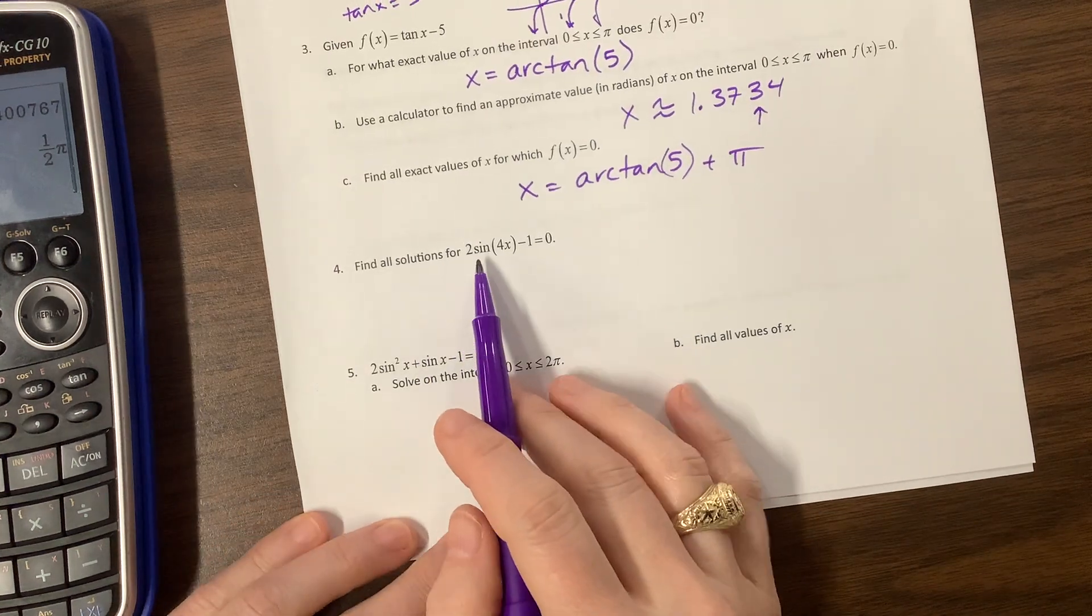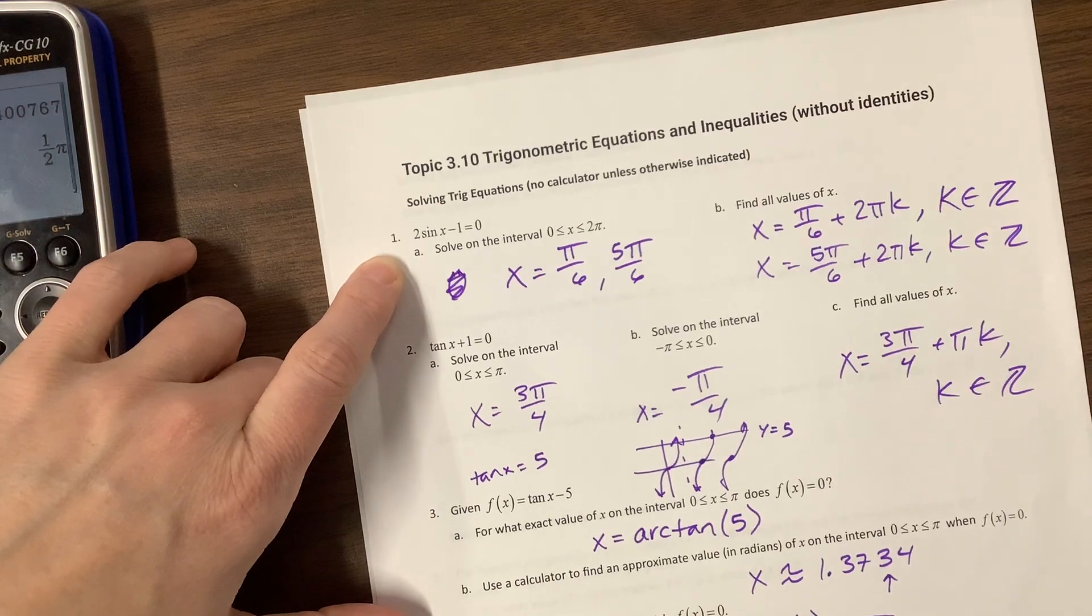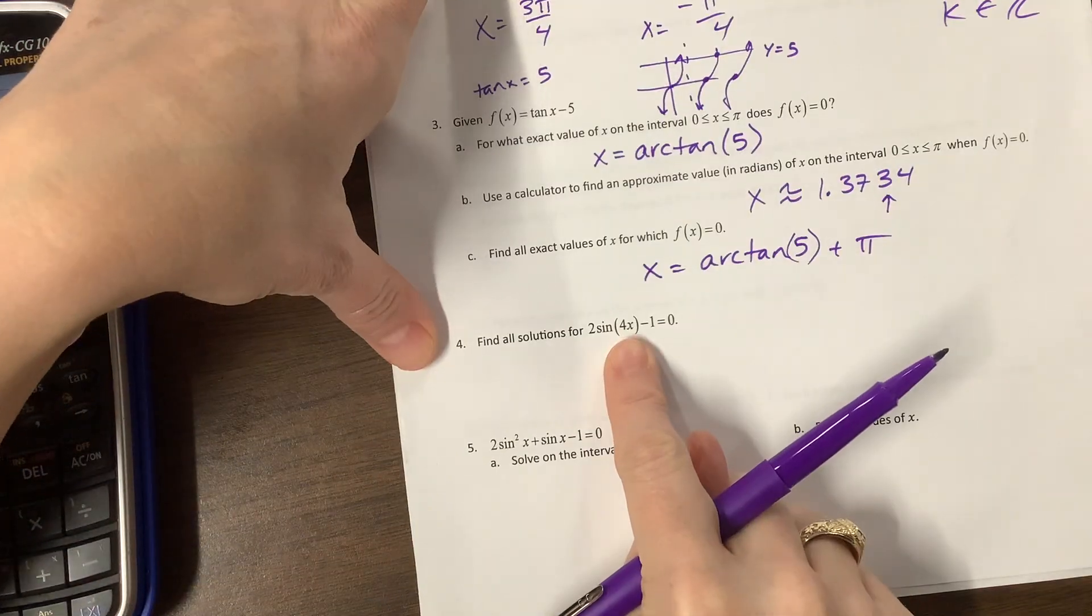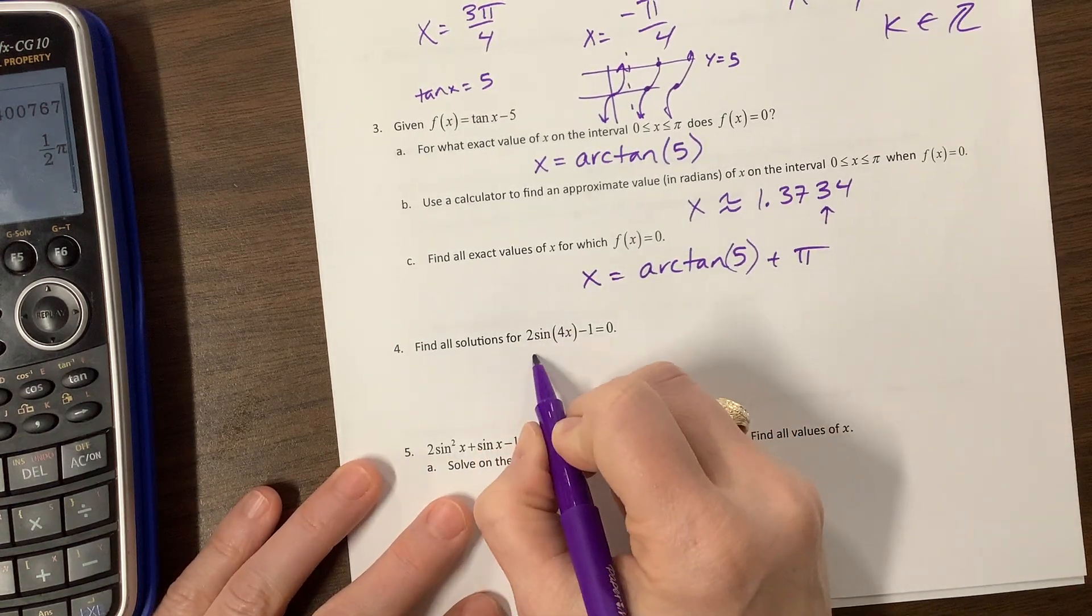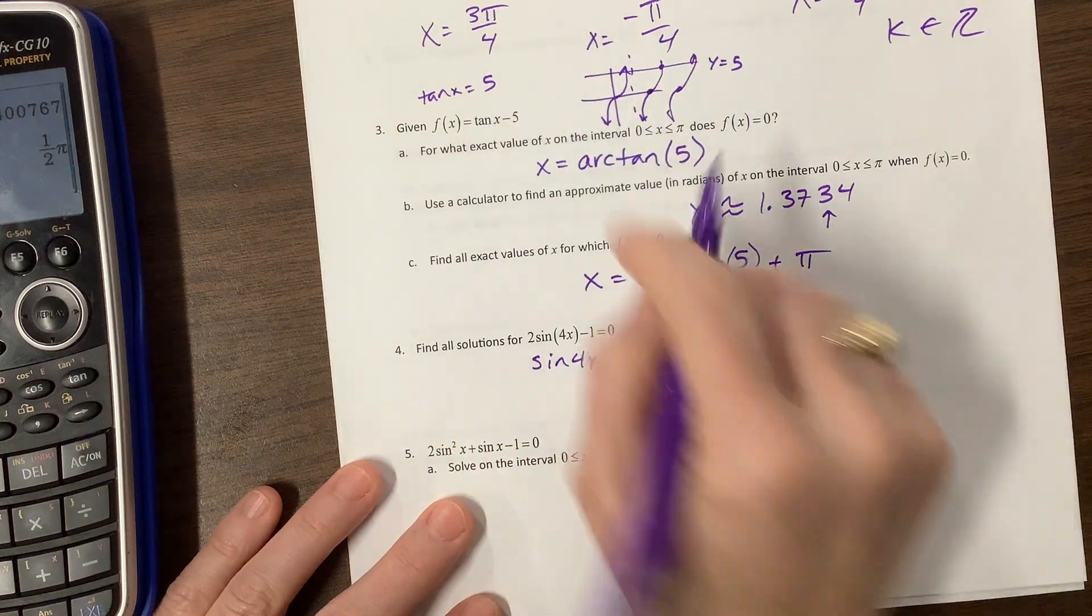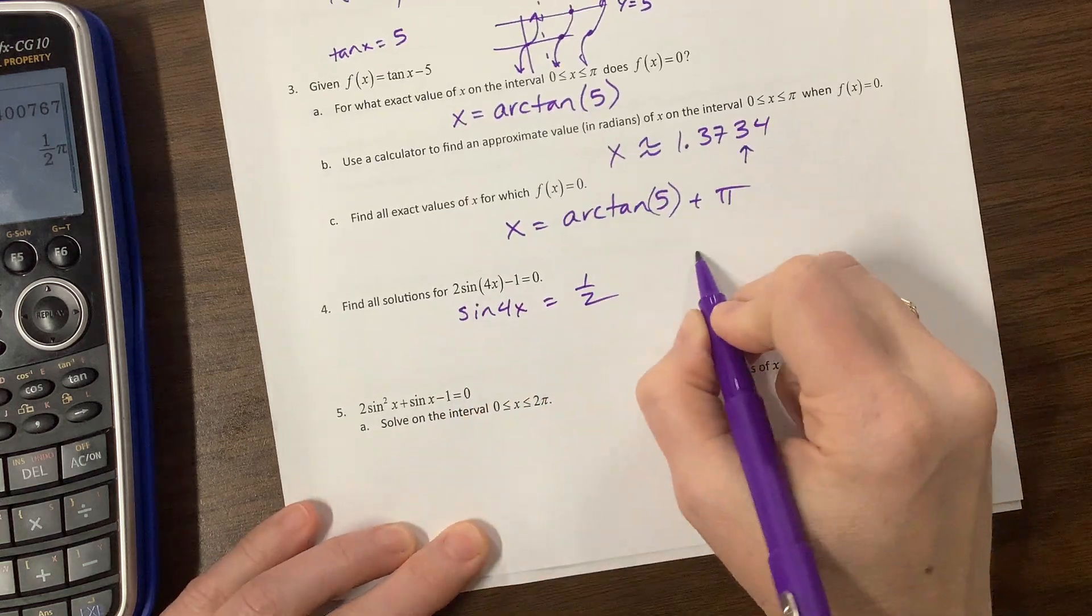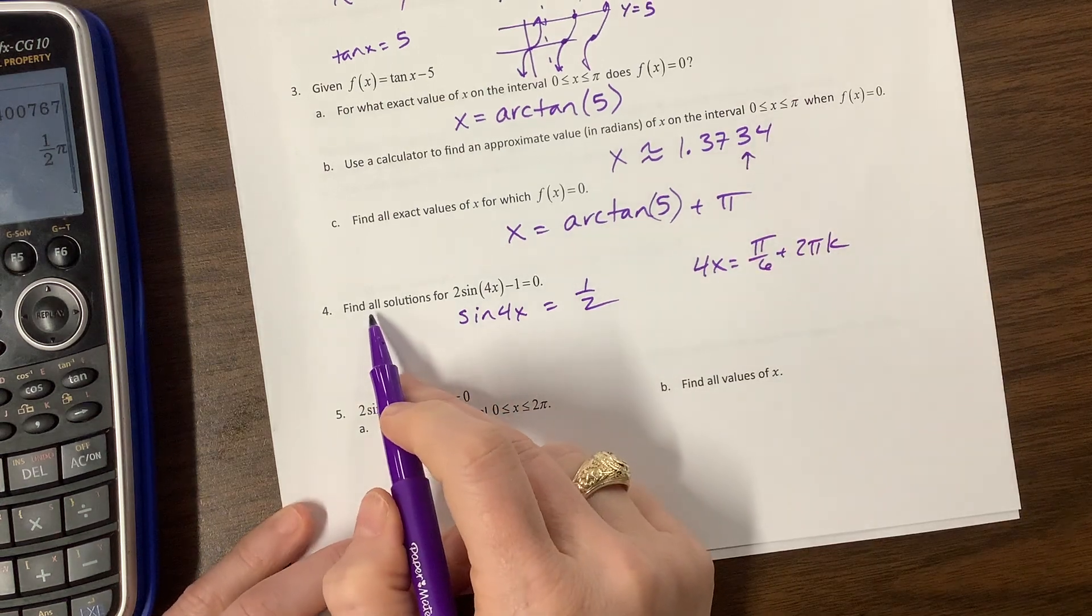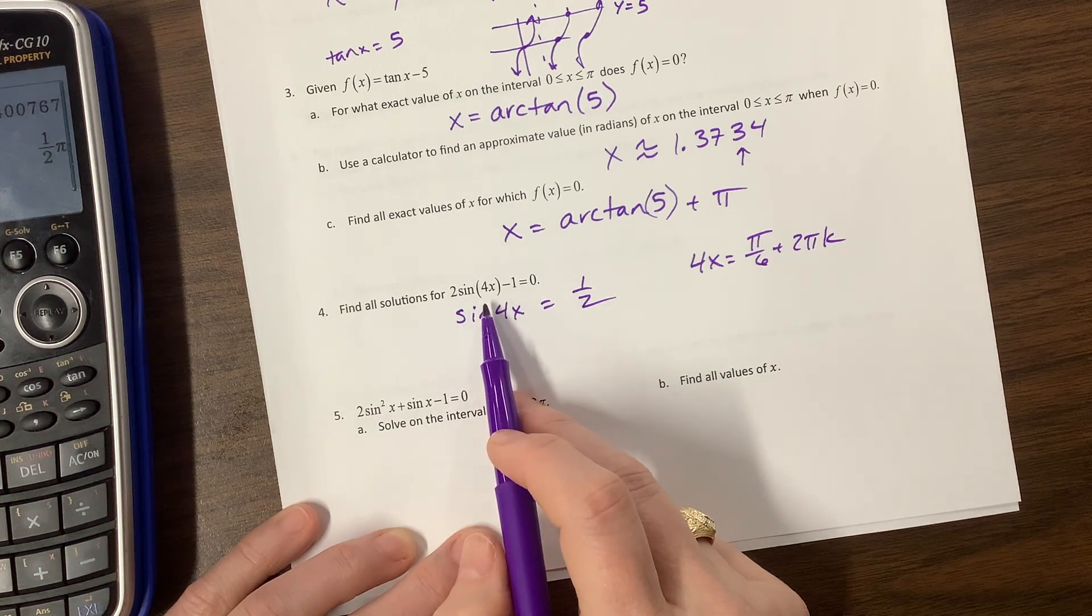The next one, find all solutions for 2sin(4x) - 1 = 0. If this doesn't look familiar to you, then go back again. It's very similar to this particular problem, but instead, it's the exact same setup, but instead of x here, we now have a 4x. And so we get sin(4x) = 1/2. We know that sine equals 1/2 at π/6 and 5π/6. We already did that problem a little bit ago. So we can say 4x = π/6 + 2πk. They wanted us to find all solutions.